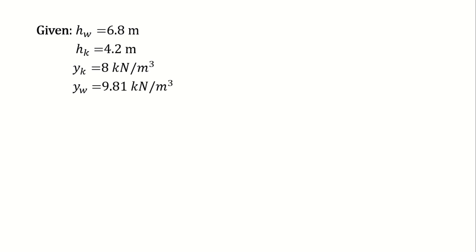So let us proceed to our solution. A. Pressure at the interface. Now the formula that we will use here is Pa is equal to omega k times height of the kerosene. So let us plug in the values: 8 kN per cubic meter multiplied by 4.2 m which is the height.